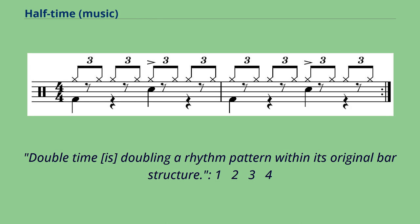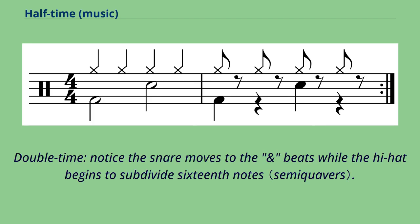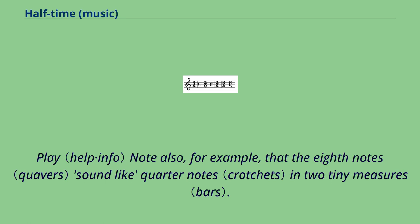Double time is doubling a rhythm pattern within its original bar structure: 1-2-3-4 / 1-2-3-4-1-2-3-4. Notice the snare moves to the end beats while the hi-hat begins to subdivide sixteenth notes. Note also, for example, that the eighth notes sound like quarter notes in two tiny measures.